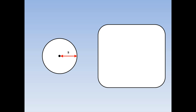What's the circumference of this circle with radius 5? First, I'll write out the formula: circumference equals 2 pi r, which means 2 times pi times the radius. Pi is 3.14 and the radius is 5. So our final answer is that the circumference is 31.4 centimetres. Notice that it's centimetres because it's a distance.